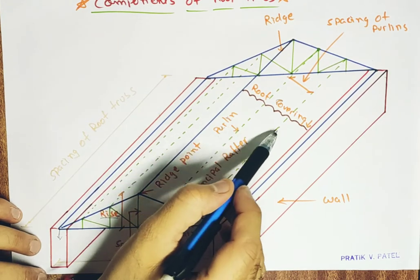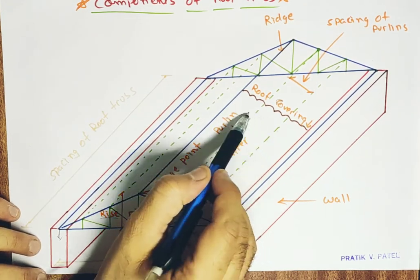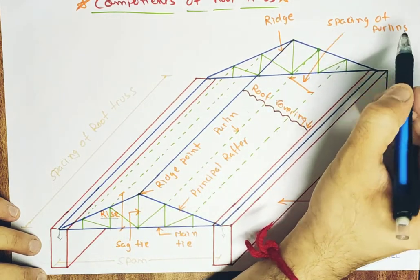So the distance between these two dotted lines means distance between two purlins. So this is given spacing of purlins.